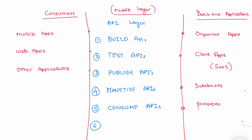The last step is analyze. You can actually analyze the traffic of your API calls and fine-tune the performance parameters to adjust to the demand or the needs. Analyze is the last step in your API lifecycle management.